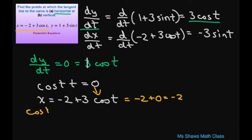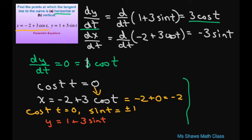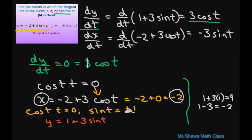If cosine of t equals 0, then sine of t equals plus or minus 1. Looking at our y value: y equals 1 plus 3 sine of t. Substituting positive 1 gives 1 plus 3 times 1 equals 4. Substituting negative 1 gives 1 minus 3 equals negative 2. So x is negative 2, and the two y values are 4 and negative 2. These are the points at which the tangent line is horizontal.